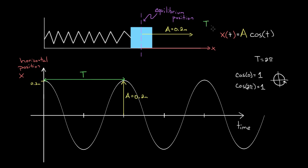The period is whatever the period is. Let's say our period happened to be six seconds. If this was six seconds, we would not want a function that resets after two pi seconds—we need a function that resets after six seconds.